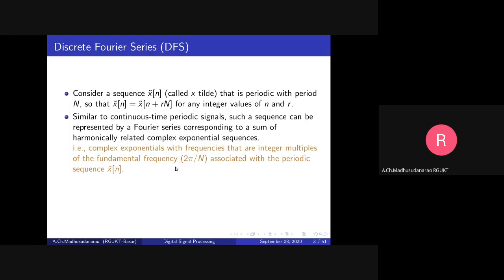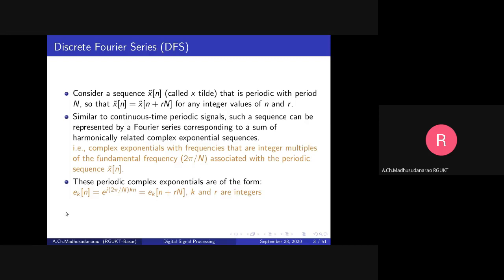The periodic complex exponentials are of the form e^(j·2π/N·k·n), which is the kth harmonic with frequency ωk = 2πk/N. This is periodic with period capital N. To verify: substituting n + rN in place of n, the second term gives e^(j·2π·rk), and since r and k are integers, this equals 1. So the second part becomes 1, confirming periodicity.